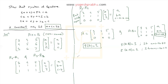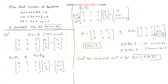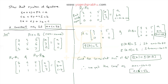The condition for a consistent system is that rank of A equals rank of [A|b]. For these two ranks to be equal, we need a + c − 2b = 0, which gives a + c = 2b. Hence verified.